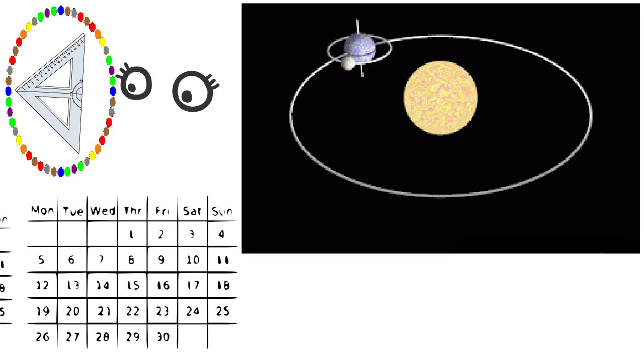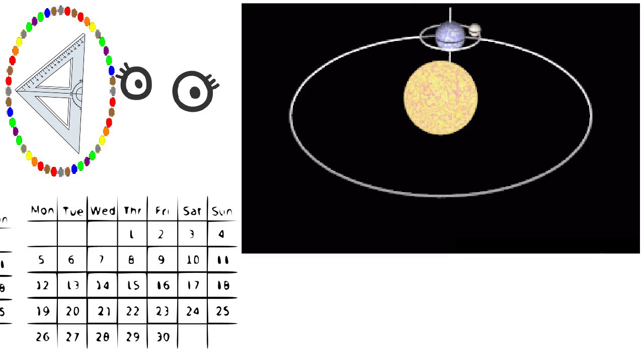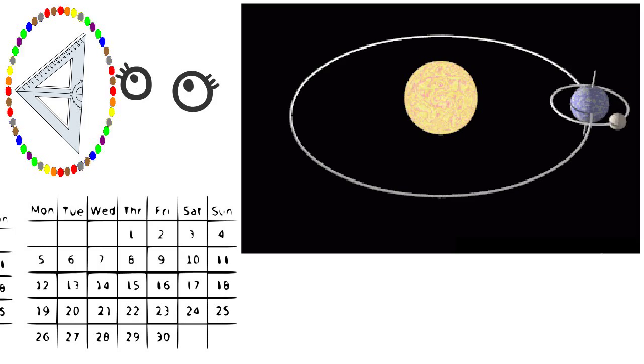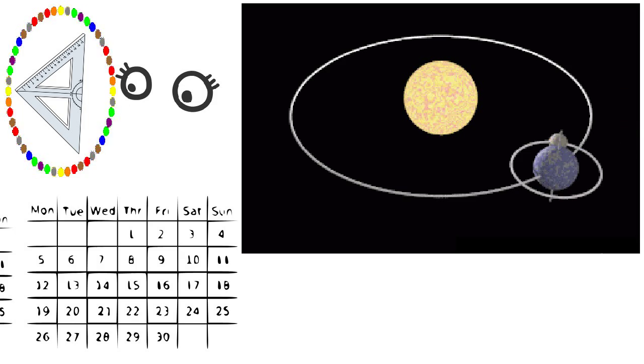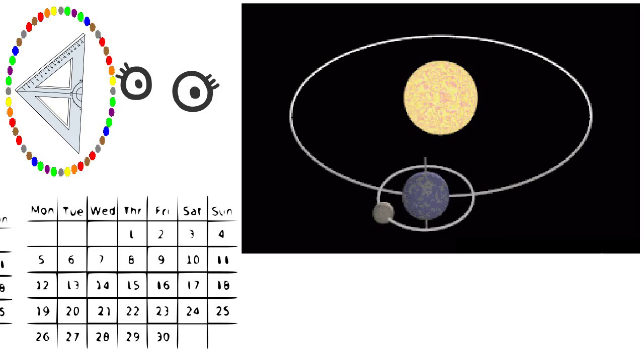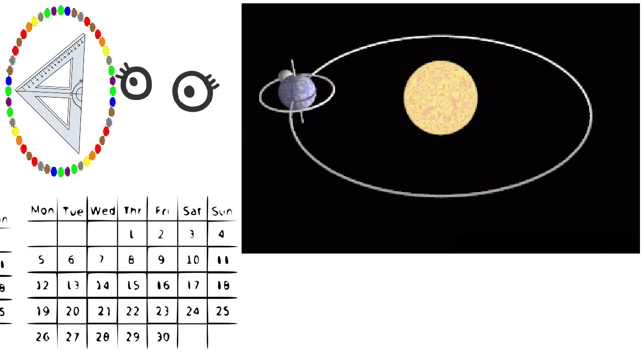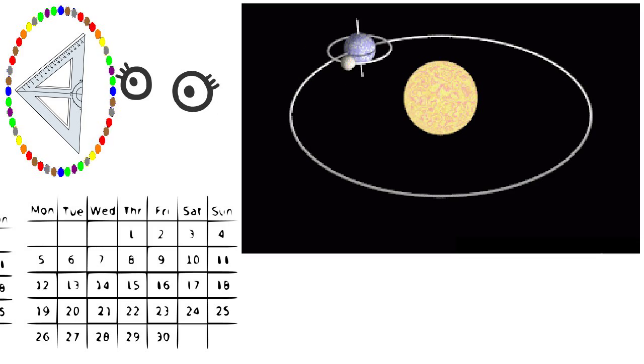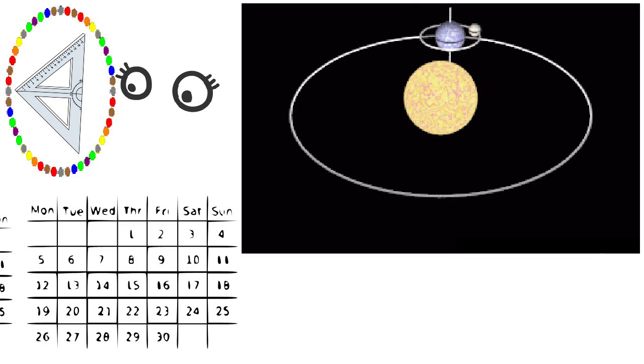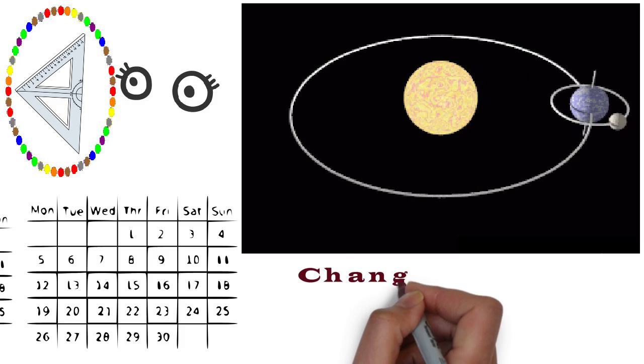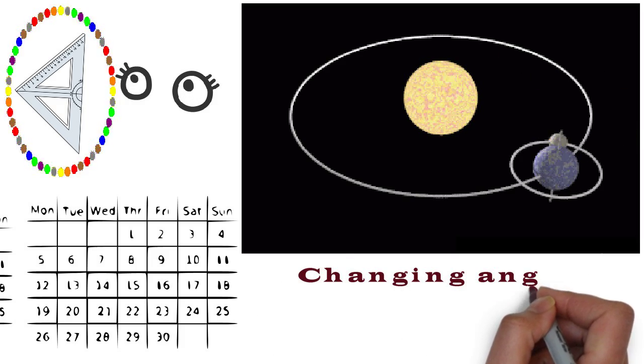If this is the sun and this is the earth and this is the moon, then my hand will move on a fixed speed around the sun. But this moon would be sometimes on the opposite direction of the sun and sometimes on the same direction of the sun. And if this is also moving around the earth, the angles would change.